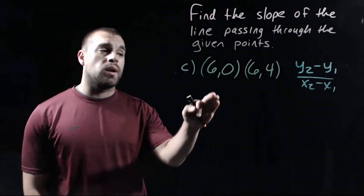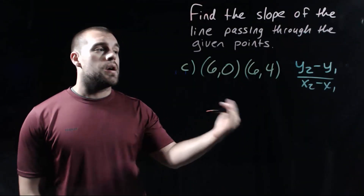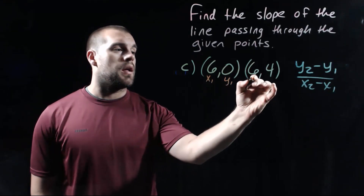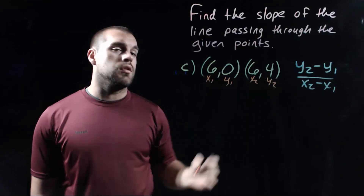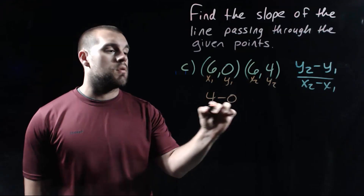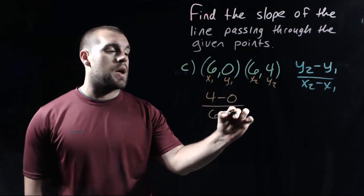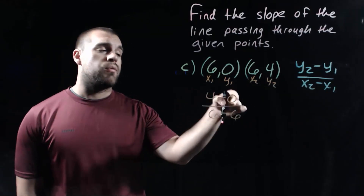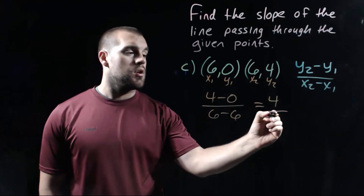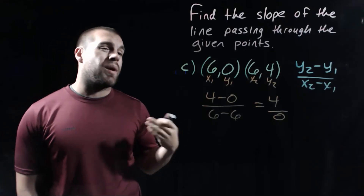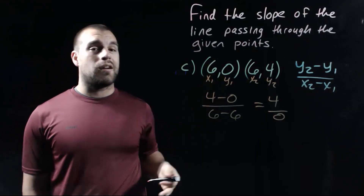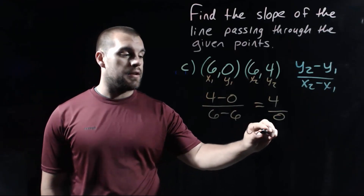In this example, we're given the points (6, 0) and (6, 4). Again finding the slope, I'll label these as x1, y1 and x2, y2. Plugging numbers into our formula: 4 minus 0 over 6 minus 6. On top, 4 minus 0 is 4. On bottom, 6 minus 6 is 0. Dividing by 0 isn't something we're allowed to do mathematically, so we say that this one is undefined.